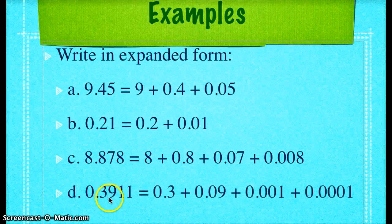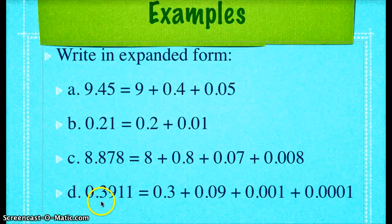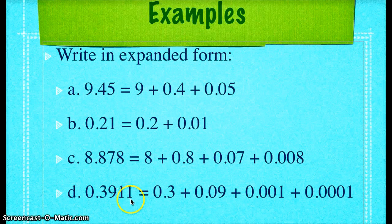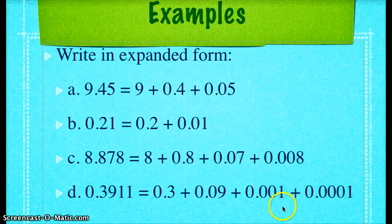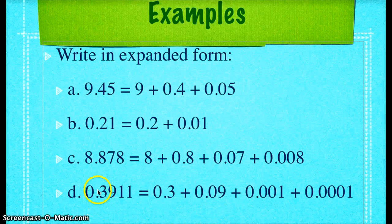The last example, 0 and 3,911 ten-thousandths can be written as 3 tenths plus 9 hundredths plus 1 thousandth plus 1 one-thousandth. If you want to check any of these sums on your calculator, or by hand, you should get these original four numbers.